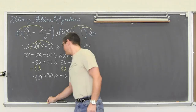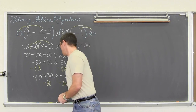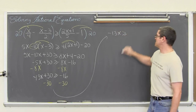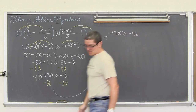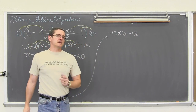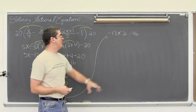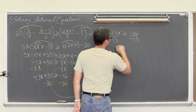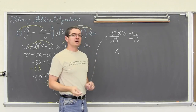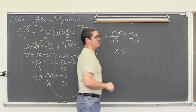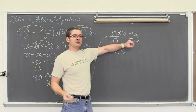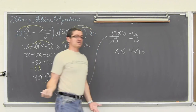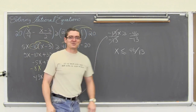I am going to subtract both sides by 30, and that will give us negative 13x is greater than or equal to negative 46. Now I need to solve for x, so I am going to undo that multiplication of negative 13 by dividing both sides by negative 13. This cancels out and we have x. We are dividing by a negative number, so we need to change the direction of that inequality — now it is less than or equal to. The negatives cancel out and we have x is less than or equal to 46 over 13. That is our answer, and I am done. I am Mr. Tarrou. Go do your homework!